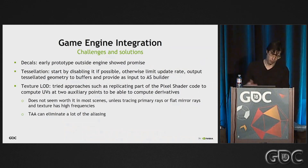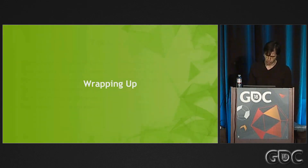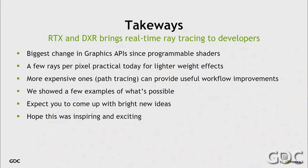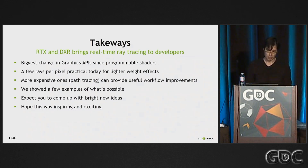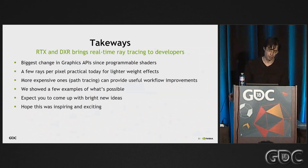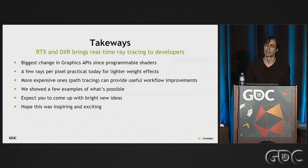In our experience for reflections, temporal anti-aliasing gets you very far, and we do not apply any texture LOD. Just to wrap up, the takeaways from this talk: with RTX and DirectX ray tracing, we're bringing real-time ray tracing to developers today. I believe this is the biggest change in graphics APIs since programmable shading was introduced, so things are finally evolving again. A few rays per pixel are possible today, especially for lighter-weight effects like shadows and AO that do less shading. More expensive approaches like path tracing are still really useful for content creation, workflow improvements, and to help guide your techniques. We showed a few examples of what's possible, but this is just the beginning — I expect you'll be showing me next year what you can do with it. I hope this was inspiring and as exciting as it is for us. Thank you for coming.